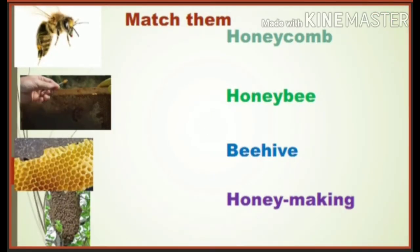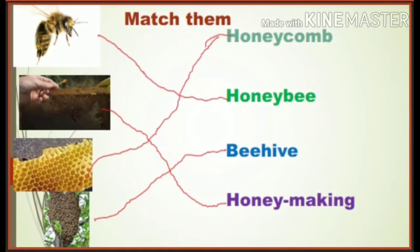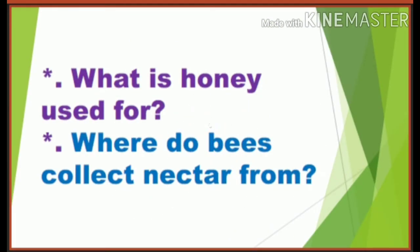Here is an activity. Observe the pictures and match the pictures with the words. Look at the first picture — it is a honey bee. Second picture — it is the honey-making process. Third picture — honeycomb. Fourth picture — it is a beehive. Now children, look at this and do the same in your textbook.